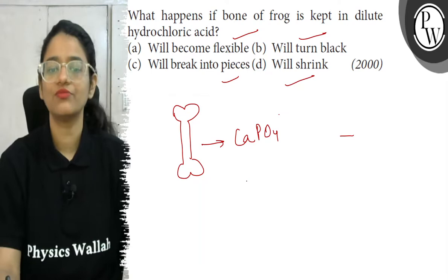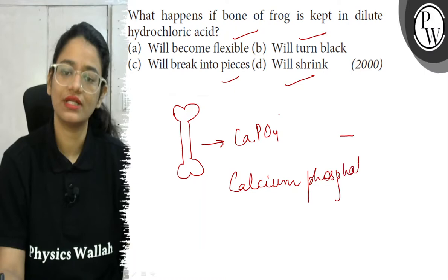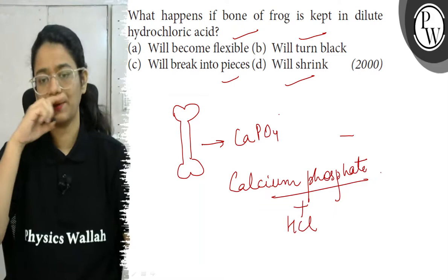So calcium phosphate is a salt. Now what will happen when you dissolve it in dilute HCl? This salt dissolves, and this salt gives hardness to the bone.